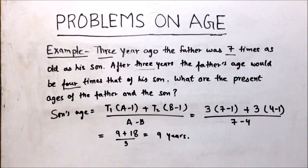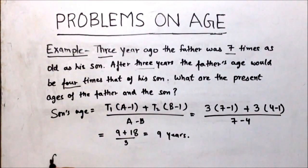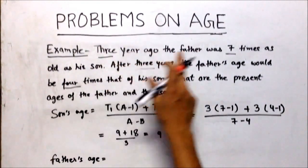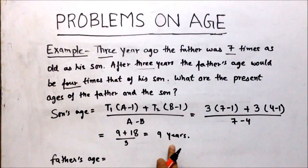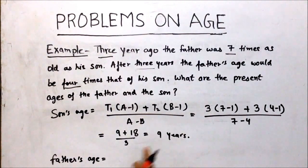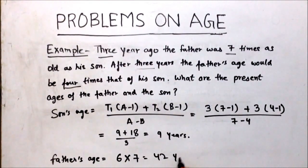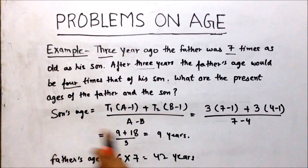The son's age is 9 years. Now for the father's age, consider the first statement: 3 years ago, the father was 7 times as old as his son. The present age of the son is 9, so 3 years ago he was 6 years old. The father's age 3 years ago was 6 into 7, which is 42 years. Therefore, the present age of the father is 42 years and the present age of the son is 9 years.